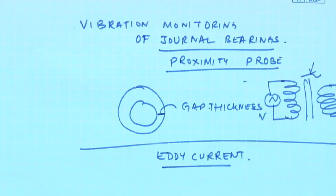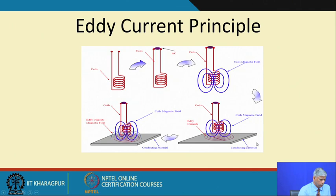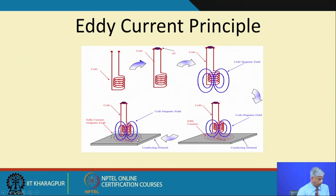When we take a coil close to a conducting material, an AC signal is applied to the coil and it produces a magnetic field. In this conducting material, because of the presence of this magnetic field very close to it, eddy currents will be generated — and the material has to be conducting. If there is a surface defect or a crack, the eddy current intensity is going to change, and by sensing this eddy current magnetic field I can indirectly determine what is wrong with the material.